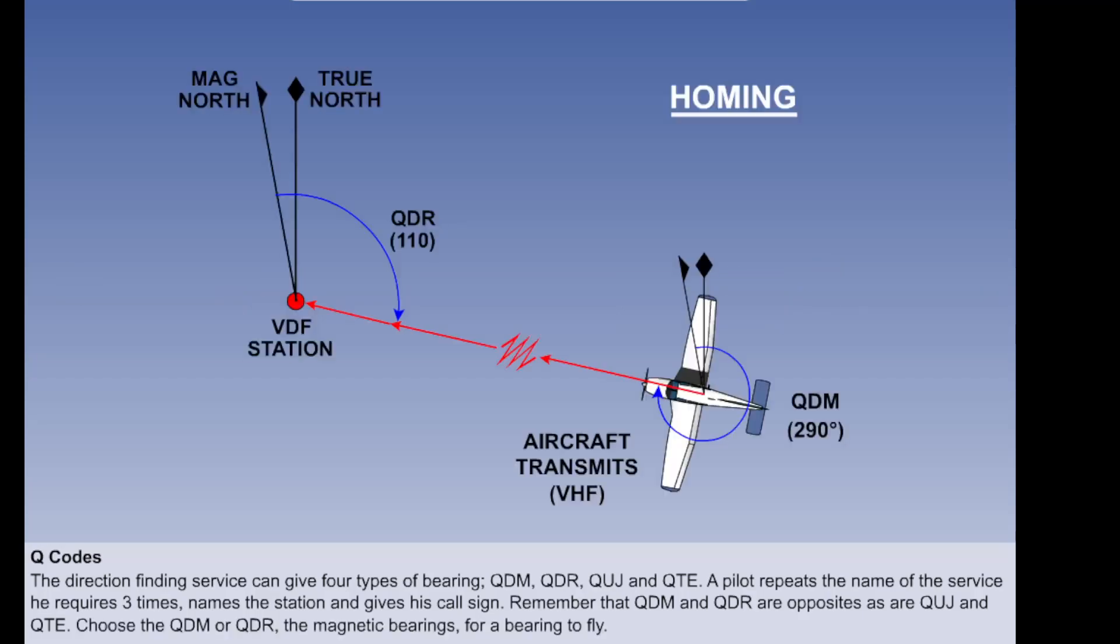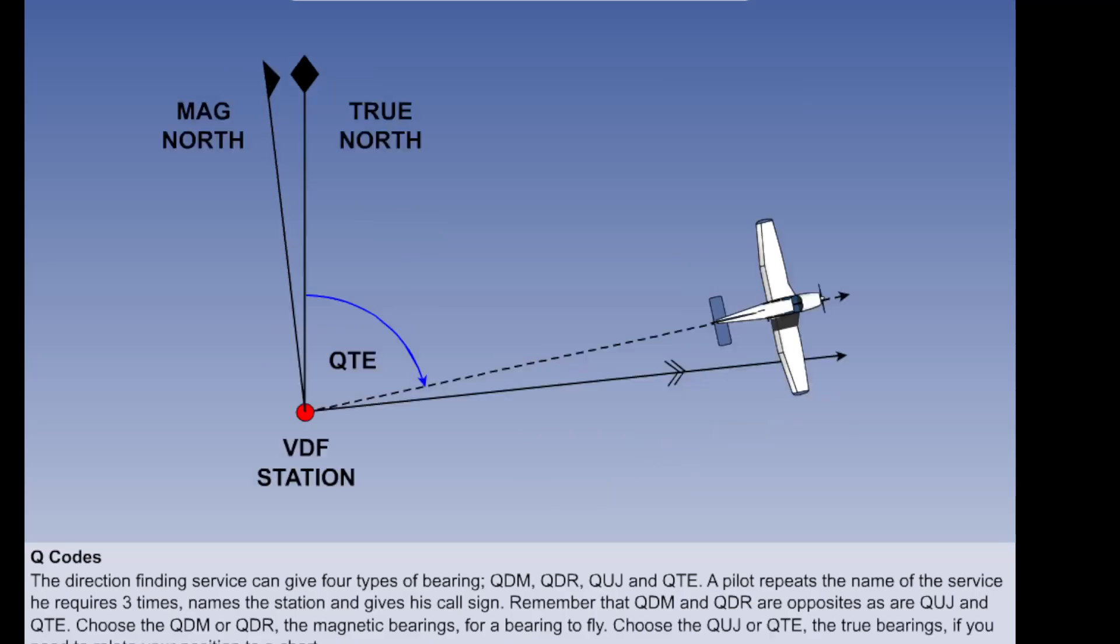If you want a track to fly, you would ask for a magnetic bearing, that is the QDM or the QDR. But if you wanted to plot your position on your chart, for example to know where you were in relation to a danger area, you would request a true bearing, as charts are oriented to true north.